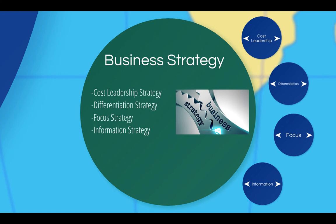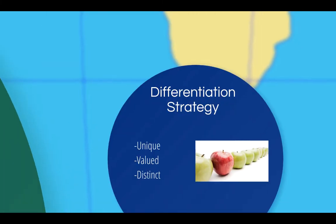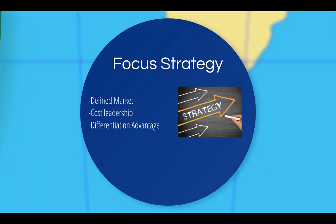There are three main performance strategies businesses use: cost leadership strategy, differentiation strategy, and focus strategy. Because logistics concerns information, it is also important to touch on information strategy. A cost leadership strategy requires an organization to pursue activities that will enable it to become the low-cost producer in an industry for a given level of quality. A differentiation strategy entails an organization developing a product and/or service that offers unique attributes valued by customers and perceived to be distinct from competitors' offerings. A focus strategy concentrates an organization's effort on a narrowly defined market to achieve either a cost leadership or differentiation advantage.